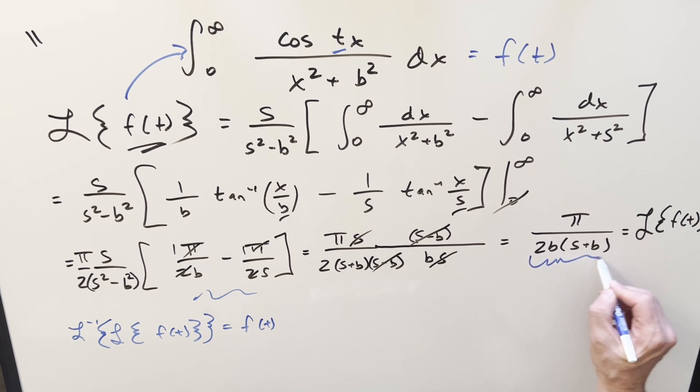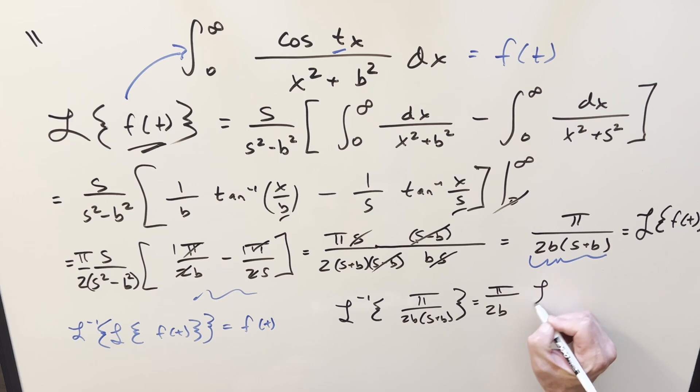Inverse Laplace transforms can be tricky. We're lucky this is pretty simple, so we're going to be able to do it. But in some cases, you probably could get stuck at this point with a difficult inverse Laplace transform. So what we're going to need on this is we're just going to need the inverse Laplace transform of pi over 2b s plus b. But pi over 2b is all a constant. So I'm just going to bring all that stuff outside of the inverse Laplace.